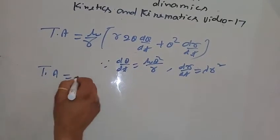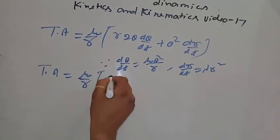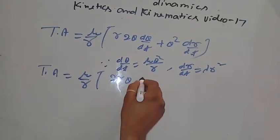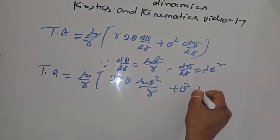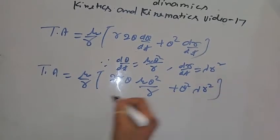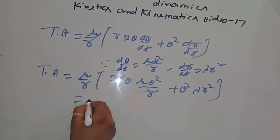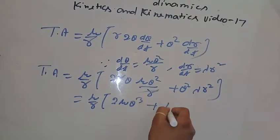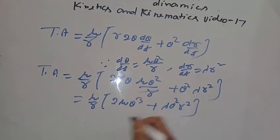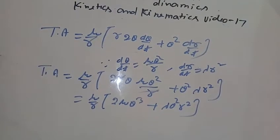Transverse acceleration equals mu by r times [2r theta times mu theta squared by r plus theta squared times lambda r squared]. The r's cancel, giving mu by r times [2 mu theta cubed plus lambda theta squared r squared].